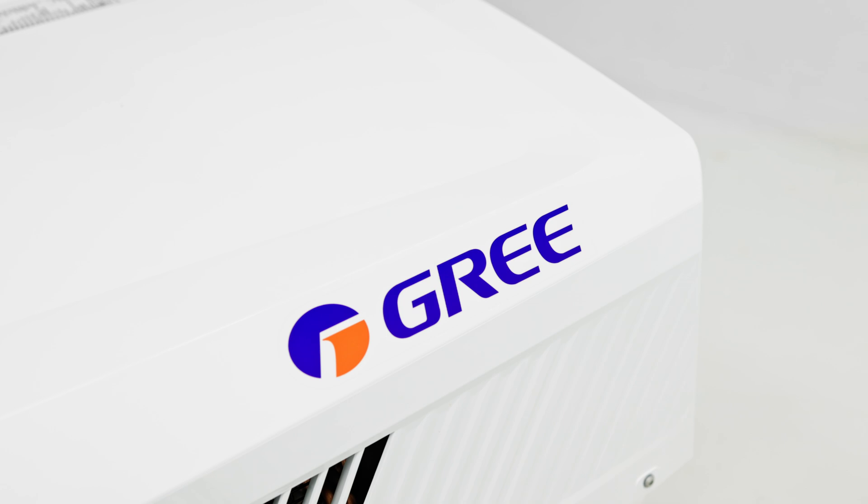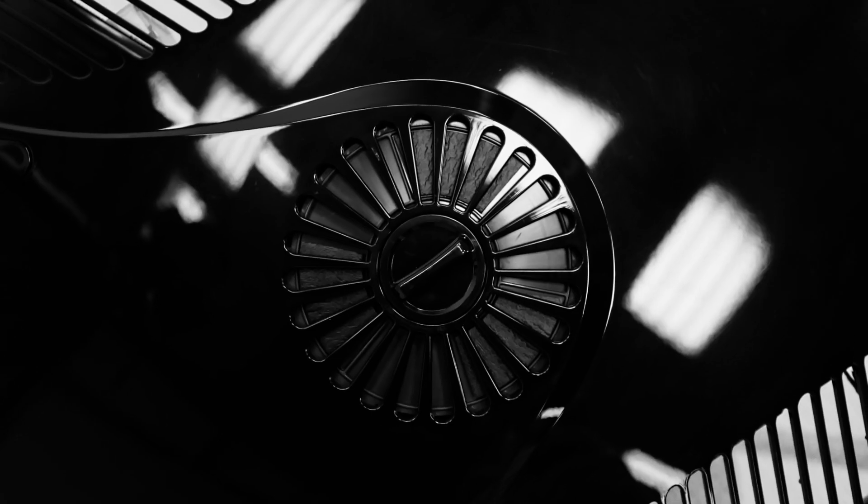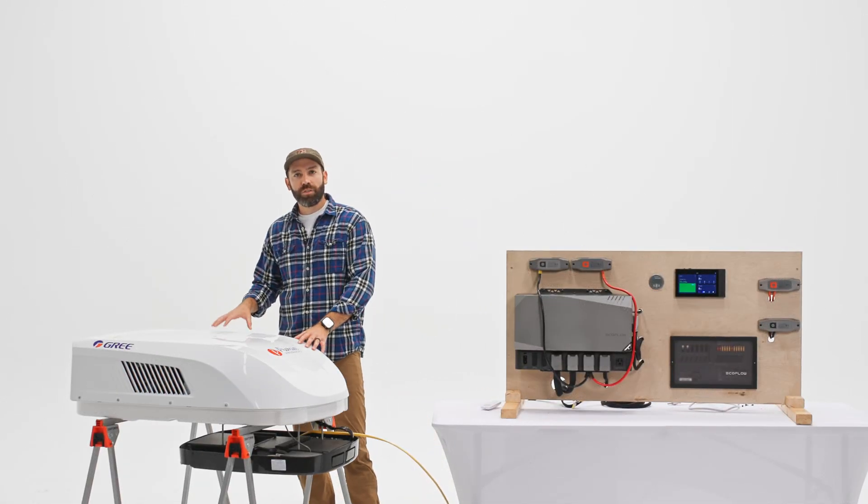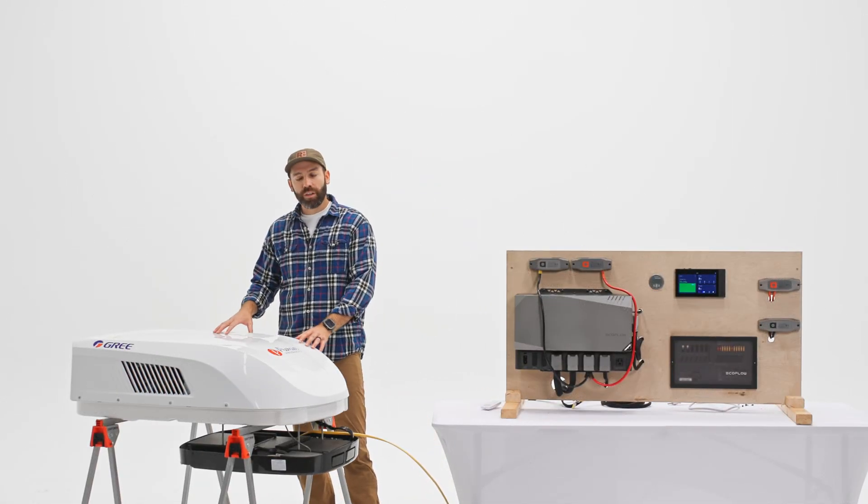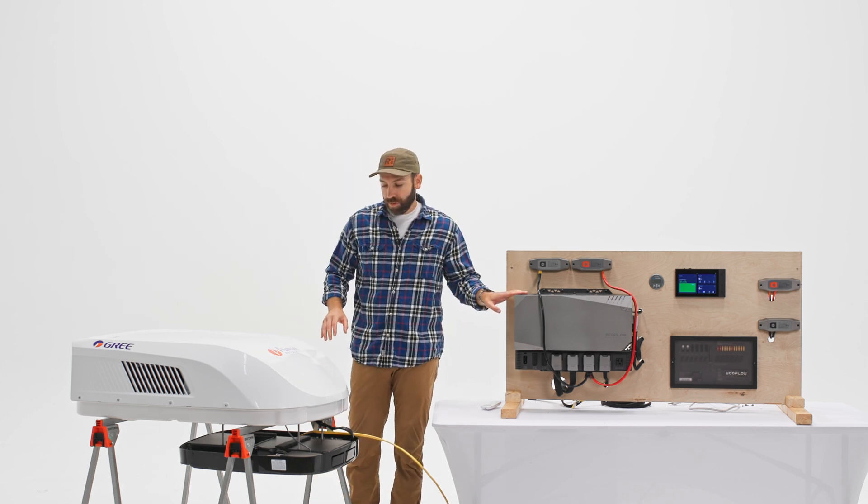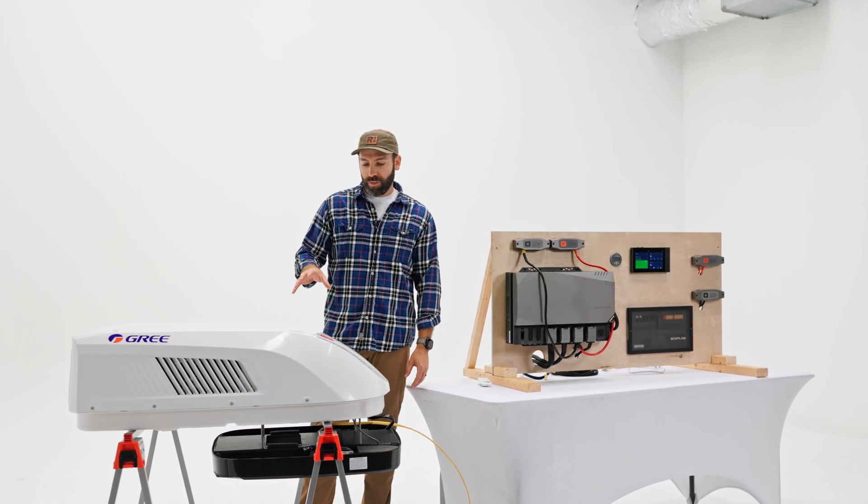All right guys, we've got the Premier Products Gree Eco Cool unit here. This is a shore power unit, so it's going to be running off the inverter on our Eco Flow system here. The reason I think this is a suitable unit for off-grid use is due to its efficiency. We ran it through our heat chamber tests - there's a link to that video down below. It performed surprisingly well, ran for almost three hours completely off-grid.